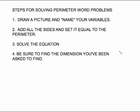Here are your steps for solving perimeter word problems: first, draw a picture and name your variables; then add all the sides and set it equal to the perimeter; solve that equation; and be sure to find the specific dimension you've been asked to find. You can pause the video here to copy those steps down. We're going to do one more — a little more complicated in the translation.